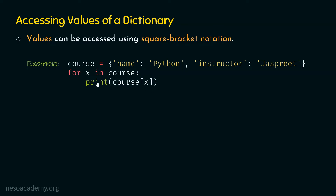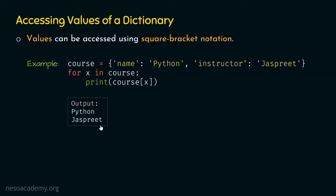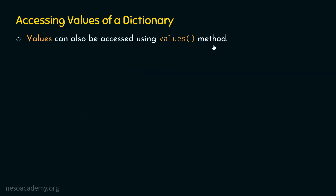The second time, this variable x will receive the key instructor, and course[instructor] gives us the value jaspreet. So the output of this program is python and then jaspreet. Note that this is not the only way to access values of this dictionary — we can use the values method as well.